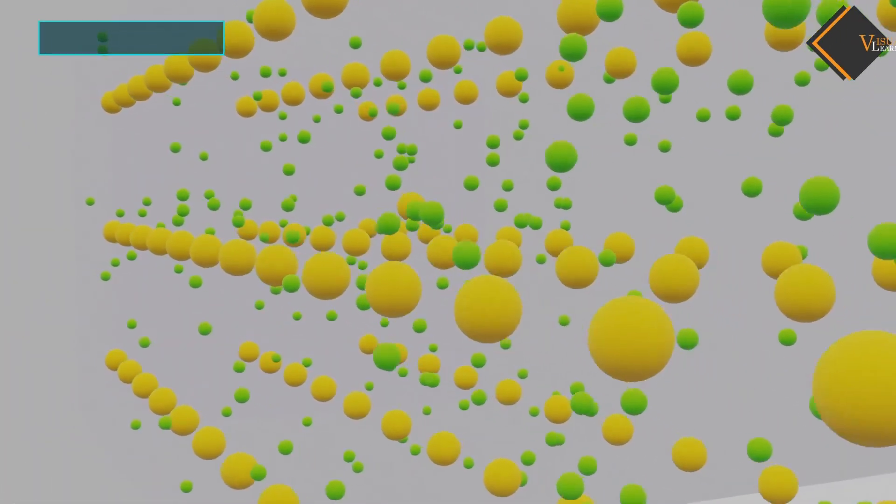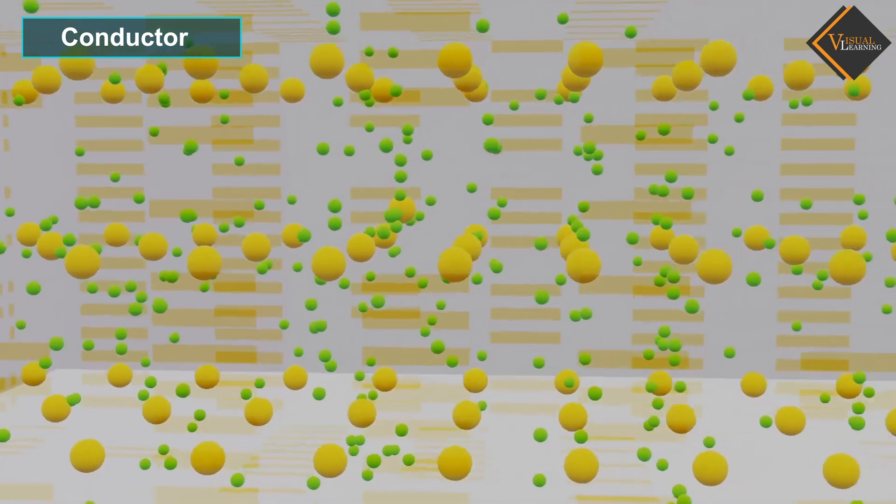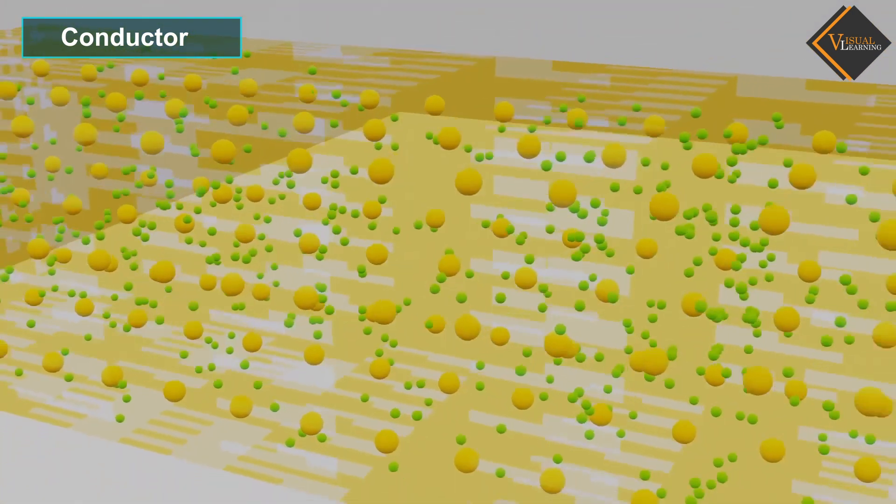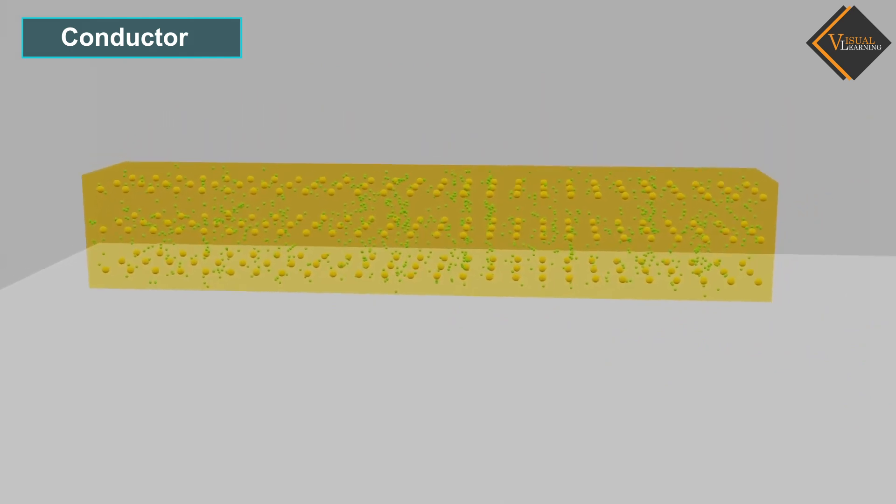In this video, we will understand conductor. A conductor is a fundamental component of electrical circuits that allows electrical energy to move from one point to another.